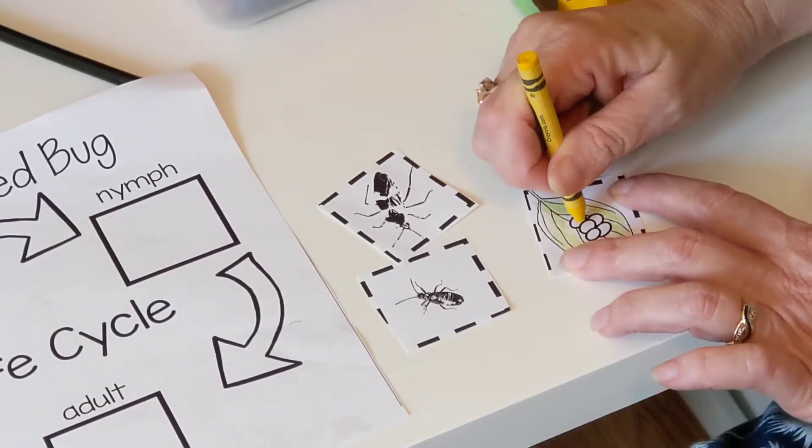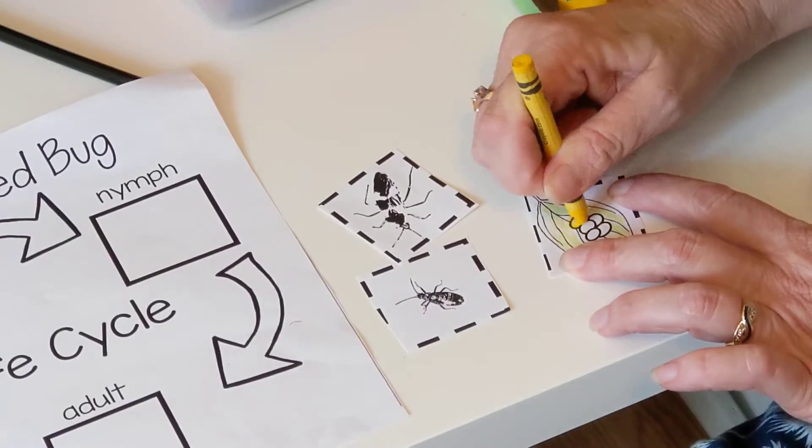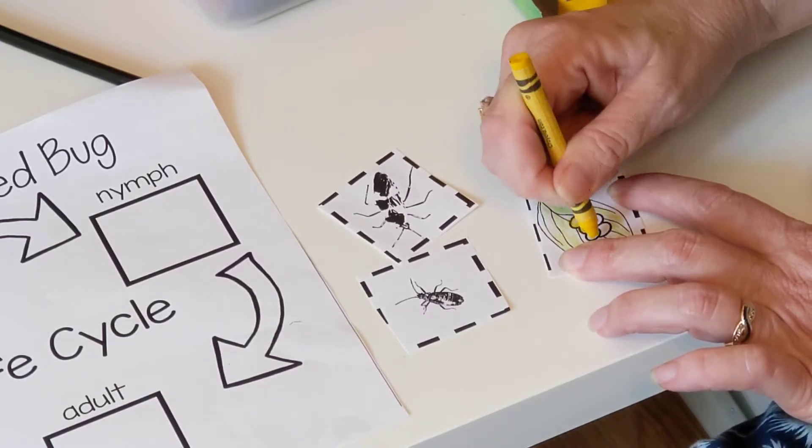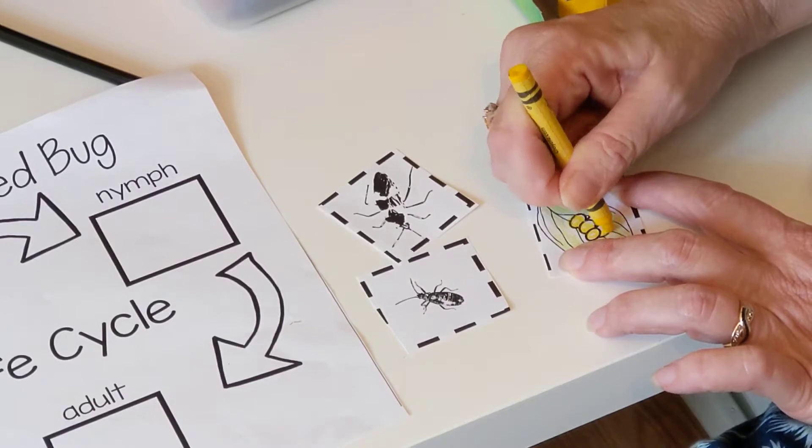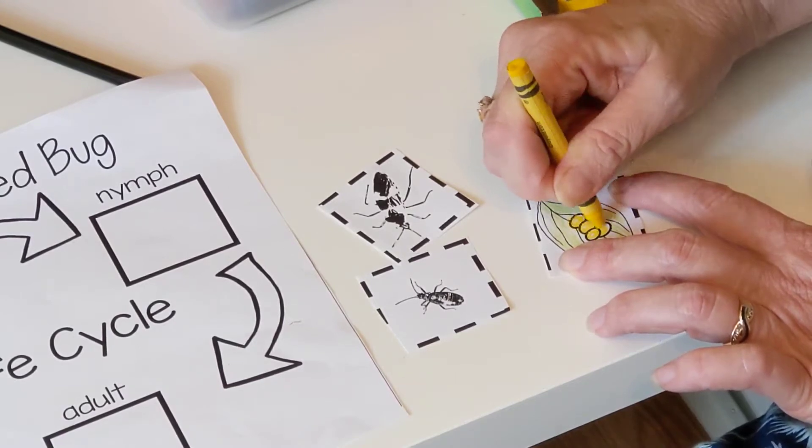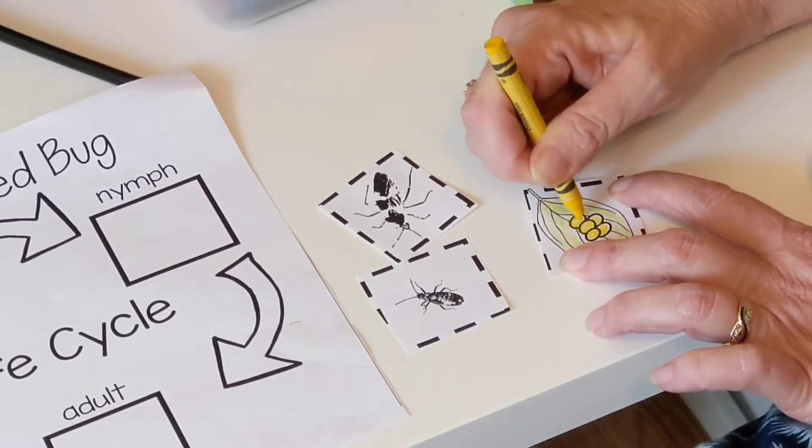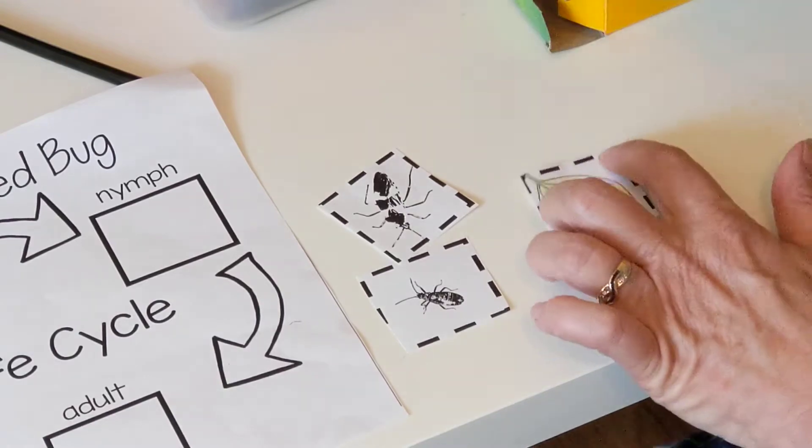I actually saw some tiny milkweed bugs that look like they just came out of their eggs. I still didn't see their eggs though. I think the eggs must be super small. It was a teeny tiny bug. I tried to take a video of it and it really didn't come out very good.